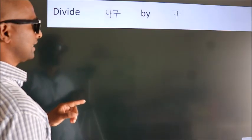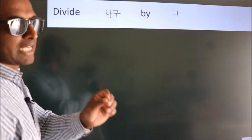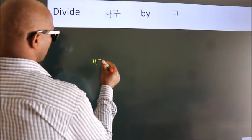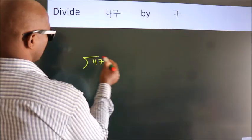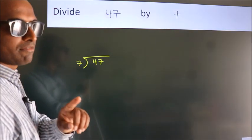Divide 47 by 7. To do this division, we should frame it in this way: 47 here, 7 here. This is your step 1.